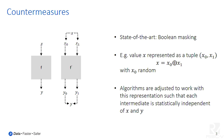One of the state-of-the-art countermeasures is based on Boolean masking, whereby you have a value x which you represent as a tuple of two values, one of which is random. If you XOR the two values together, it becomes the real secret. Because one of them is random, if you calculate with the value as the tuple and change your algorithms to deal with this representation, all the intermediate values will be statistically independent of that secret, and your power consumption will not be related to the secret value anymore.